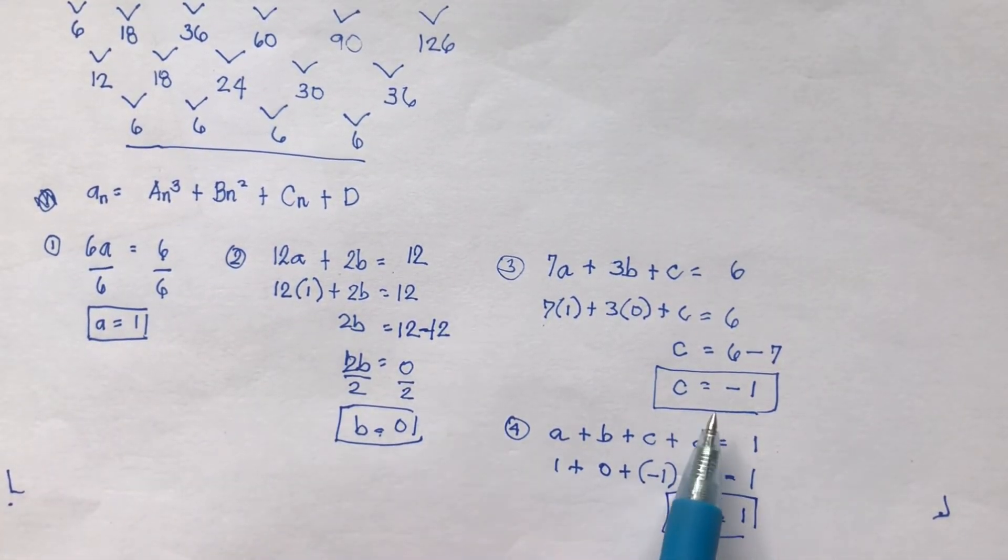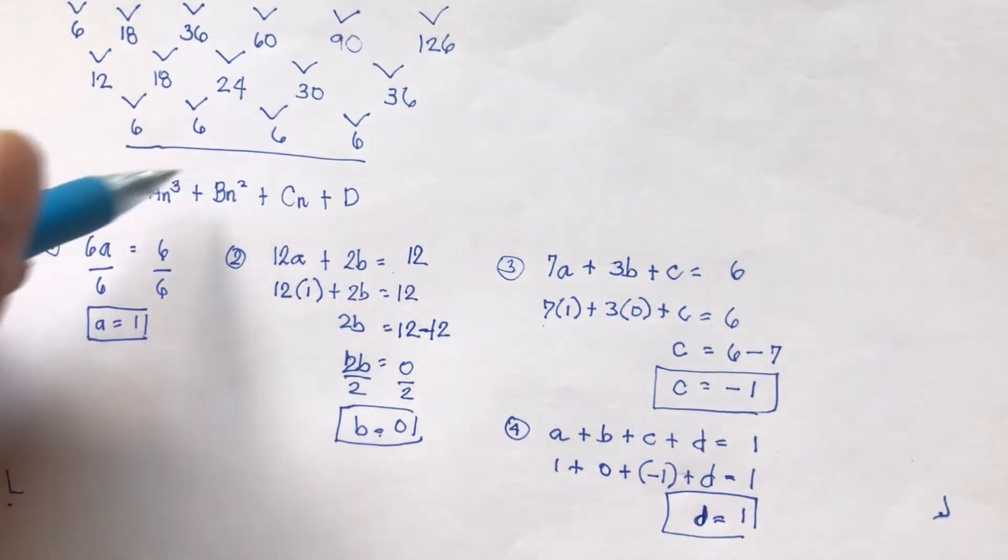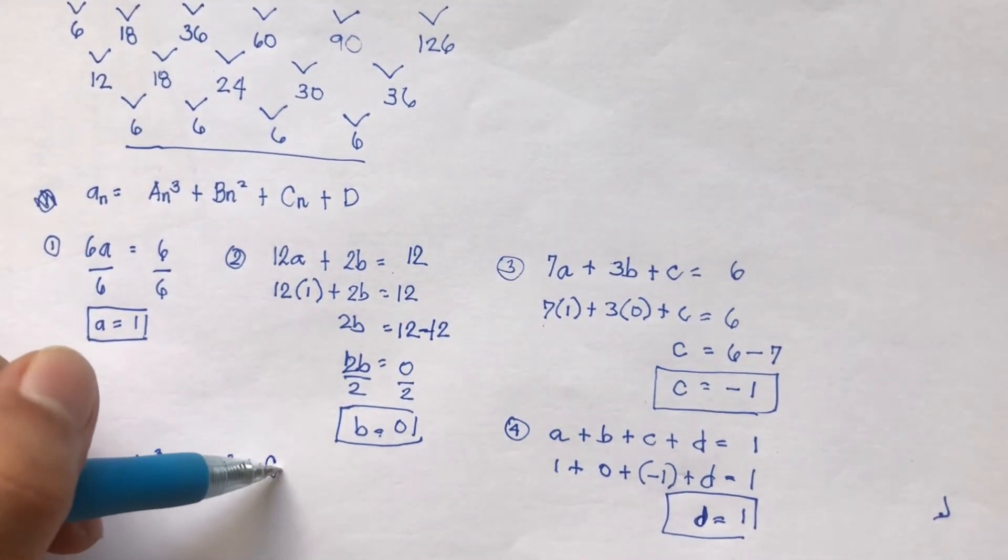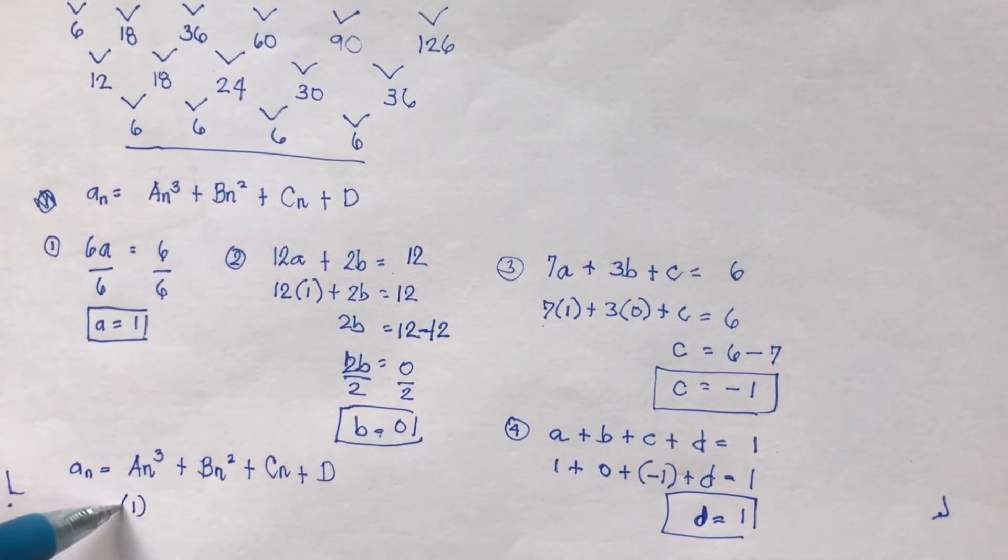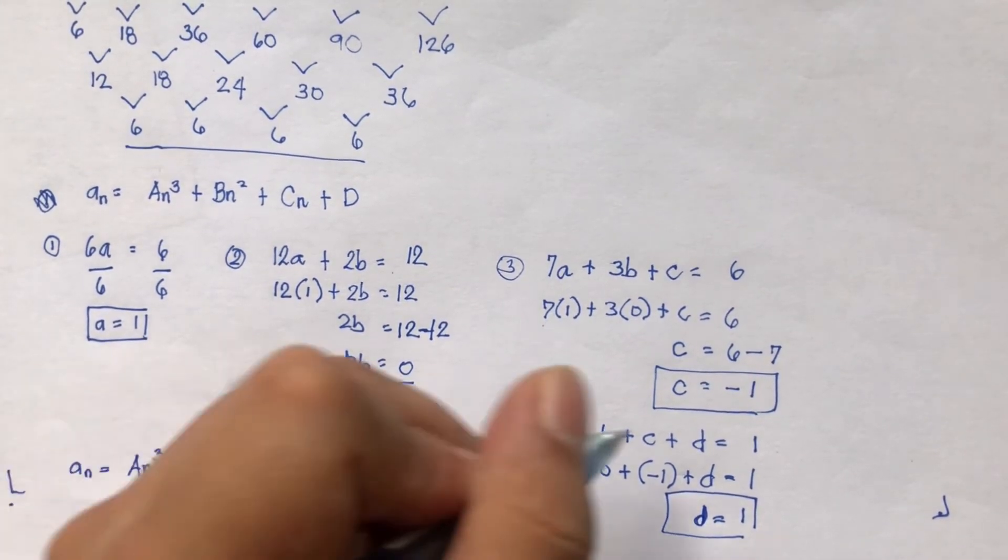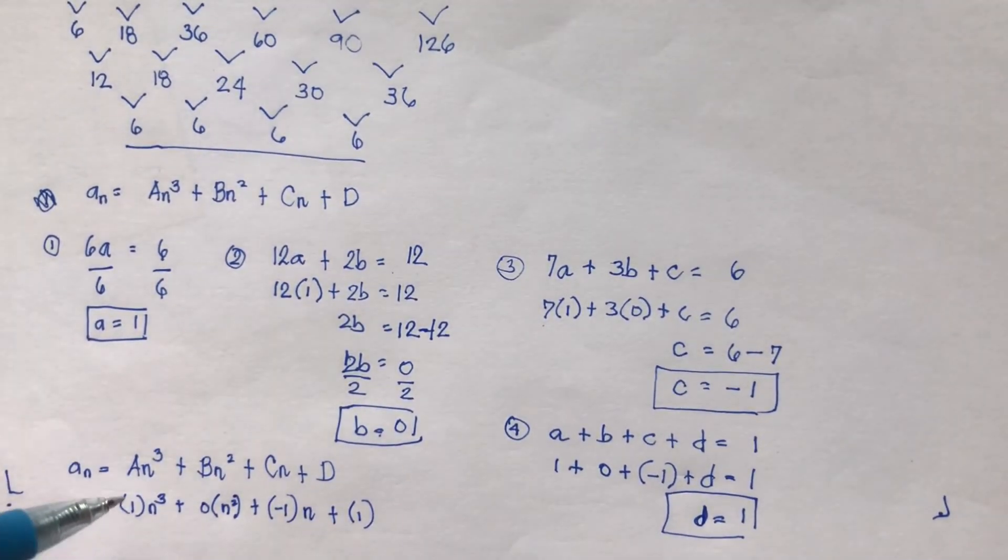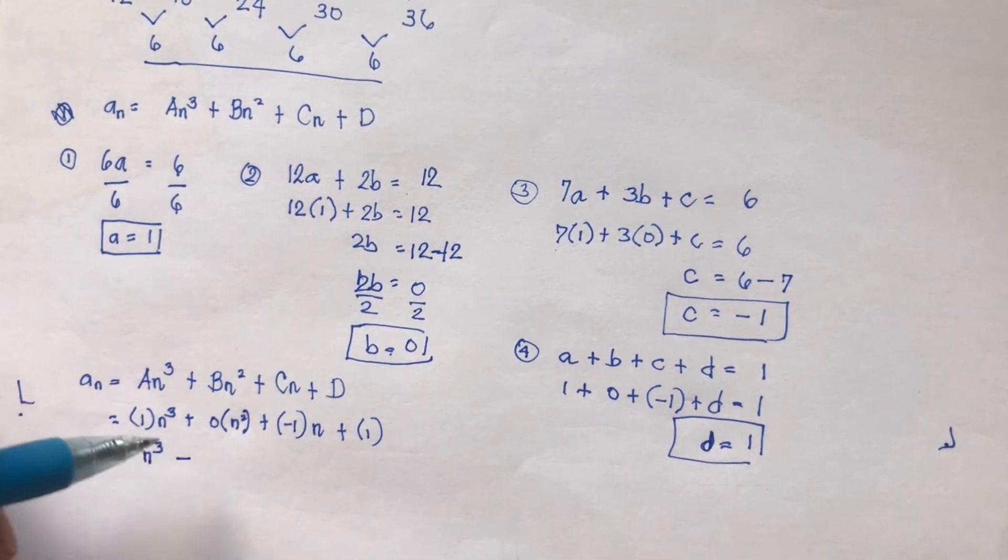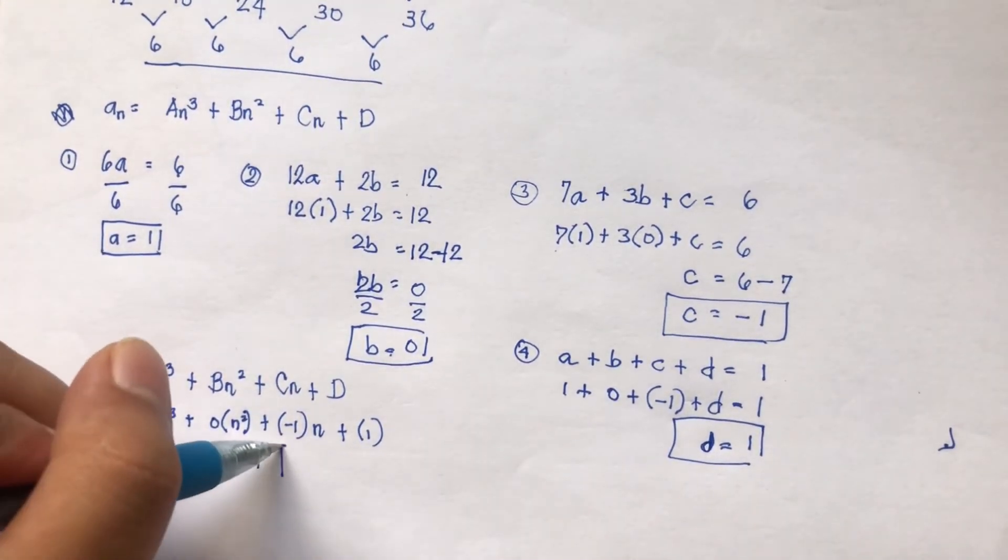So you have a, you have b, you have c, and you have d. So the general term now here, using this, is an³ plus bn² plus cn plus d. Substitute 1 times n³ plus 0 times n² plus negative 1 times n plus 1. So this will be 1 times n³ is n³. This will be 0. This will be minus n plus 1. So this is now your general term.